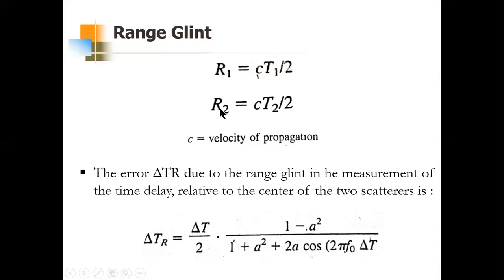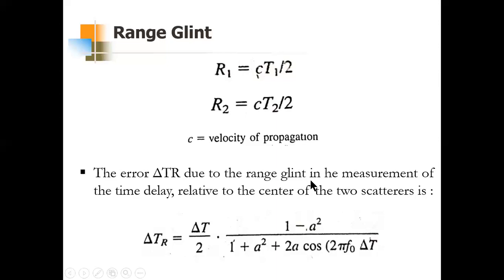The error delta_tr equals delta_t/2, where delta_t = 2(r2 − r1)/c = t2 − t1, which is the time extent of the target. The parameter 'a' is the ratio of the amplitudes of the signals from the two scatterers, typically less than or equal to one, and f0 is the radar carrier frequency. The range measurement error can be larger than the physical extent of the target — this is a serious problem. The best approach to reduce range glint is to employ high range resolution if sufficient bandwidth is available.